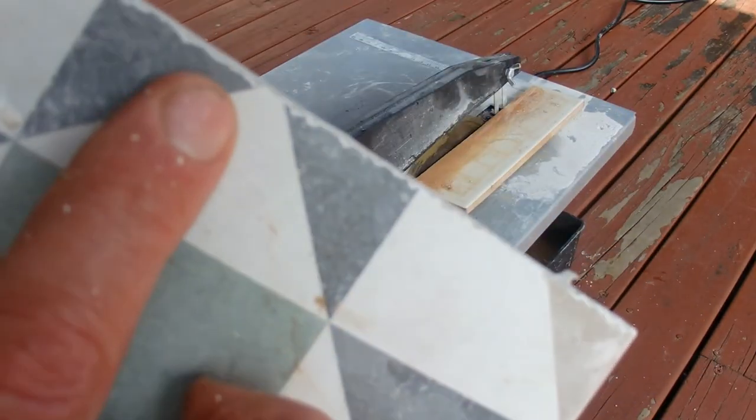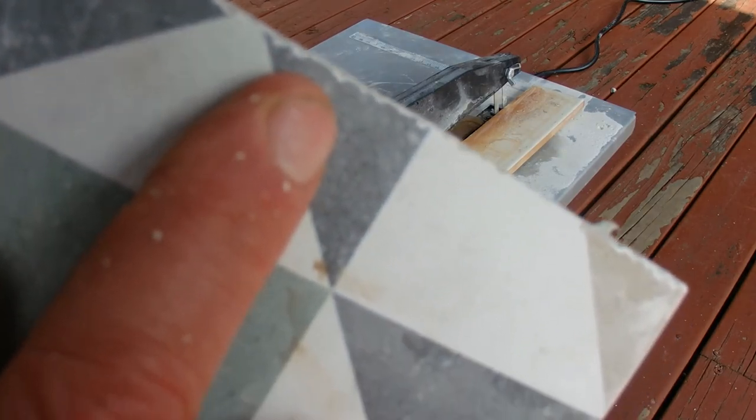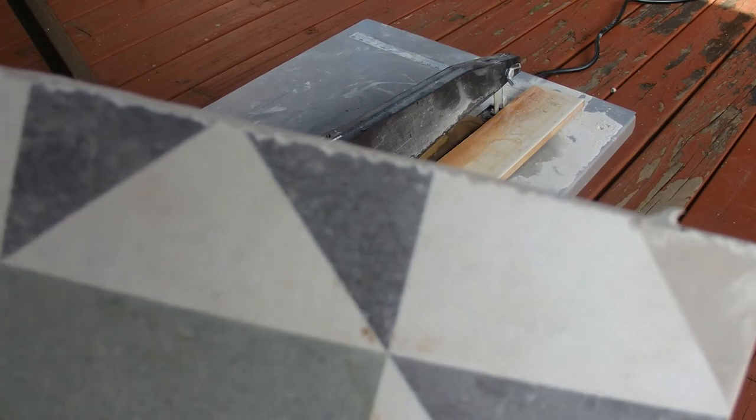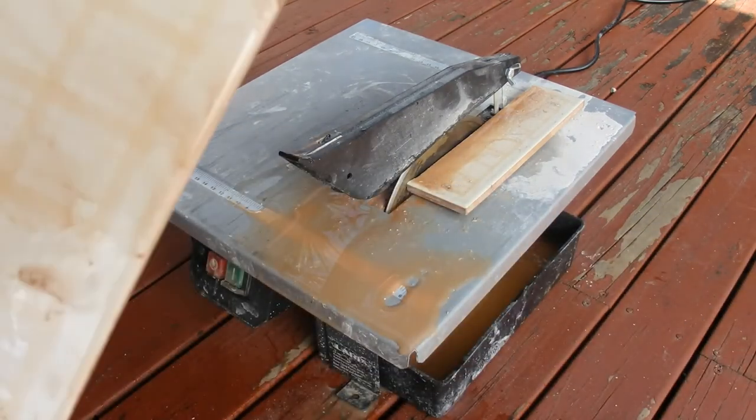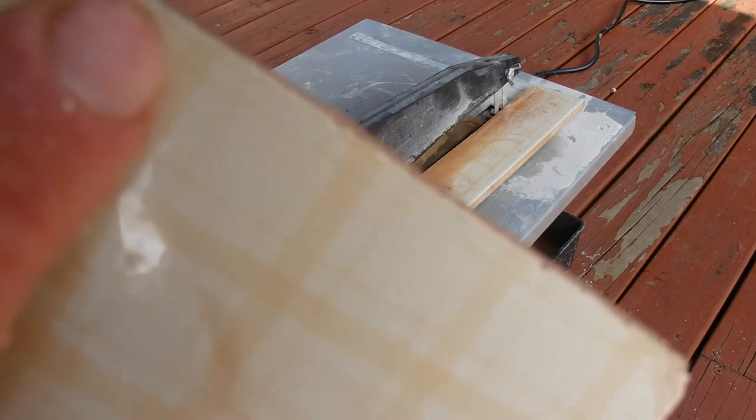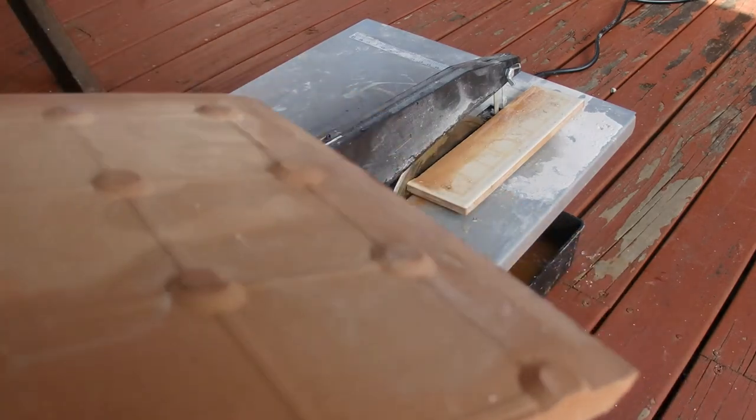So obviously it's got to do with the porcelain tile being a lot harder than the ceramic tile, and this tile cutter makes the chips a lot bigger on a porcelain tile compared to the ceramic tile.